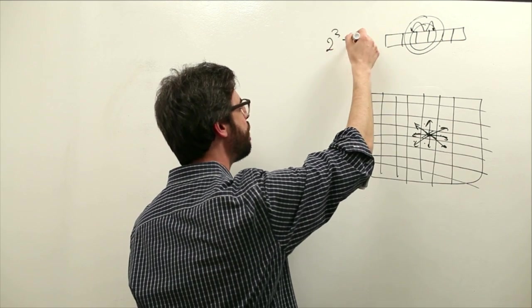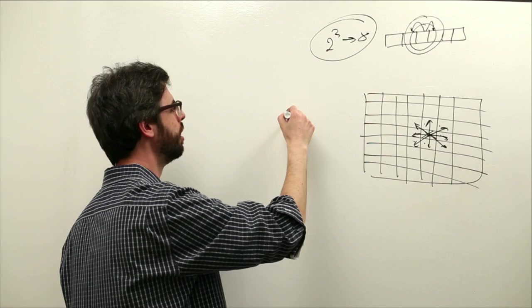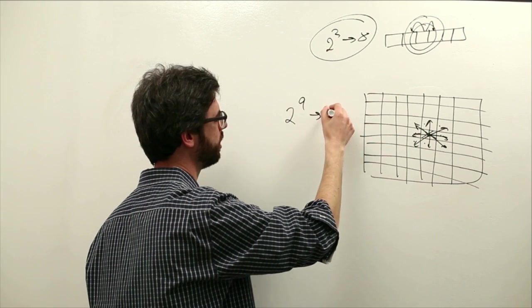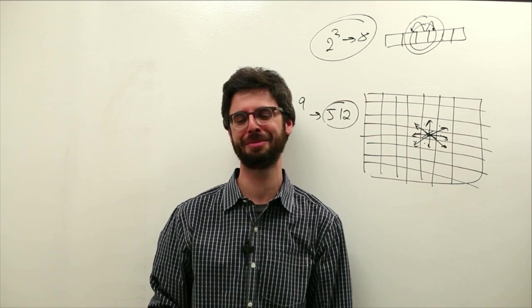Remember, there were eight possible ways that these cells could be configured. Now, two to the ninth possible ways, 512, I hope I got that right, there are 512 possible ways this cell could be configured.